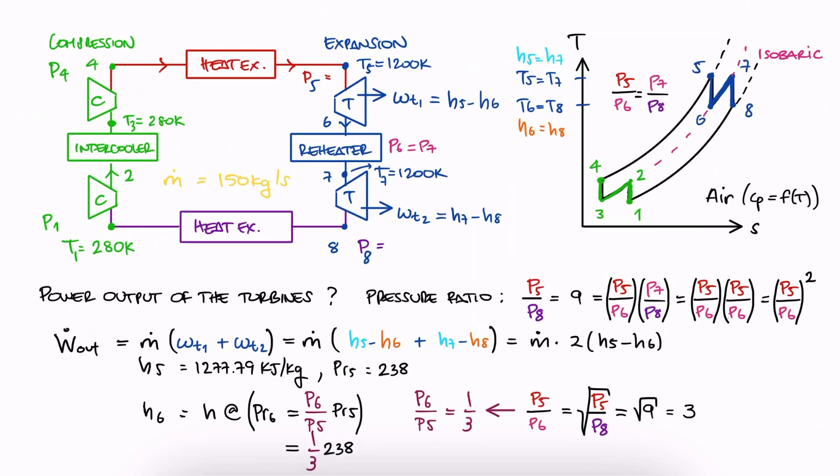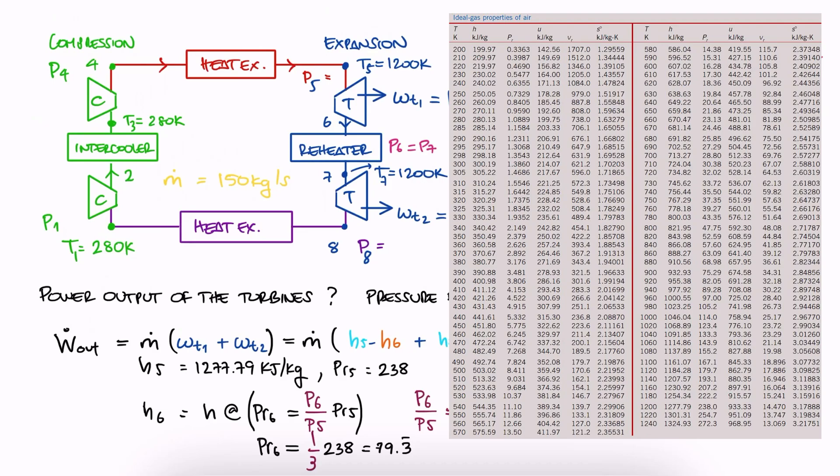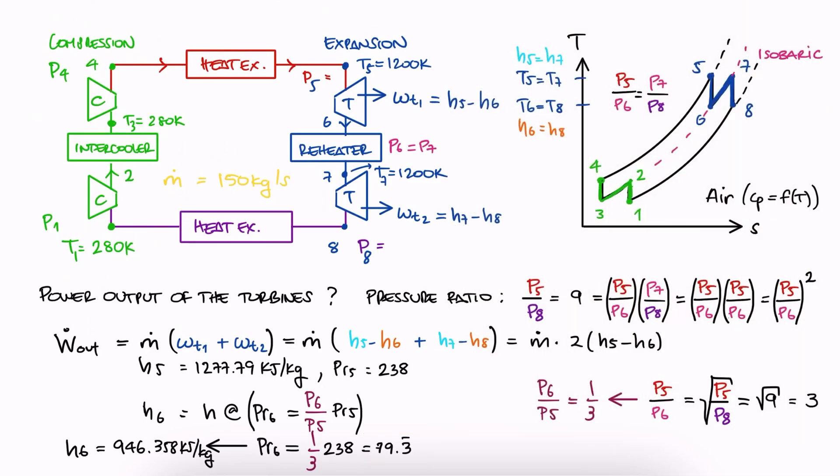We substitute these two values to find PR6, and with the table, we interpolate between its closest two values, from PR to H to find H6. Check the interpolation lecture and examples linked below if you don't remember how to interpolate. We substitute H6 and H5 to find the specific work of the turbines, and we multiply by the given mass flow rate to find their total power output.